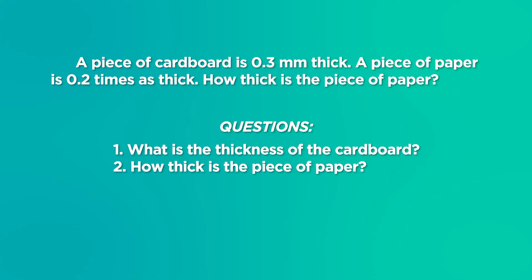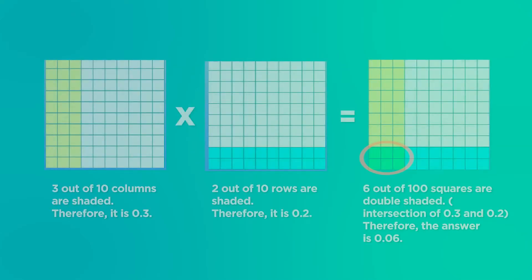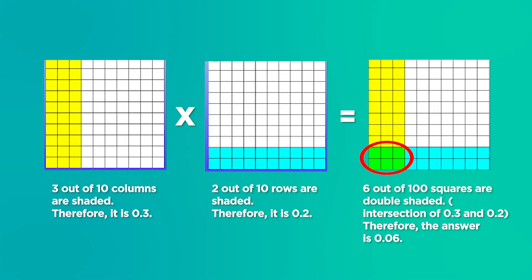To answer the problem, we will illustrate 0.3 and 0.2 using pictorial models. 3 out of 10 columns are shaded, therefore it is 0.3. 2 out of 10 rows are shaded, therefore it is 0.2. 6 out of 100 squares are double-shaded, therefore the answer is 0.06.